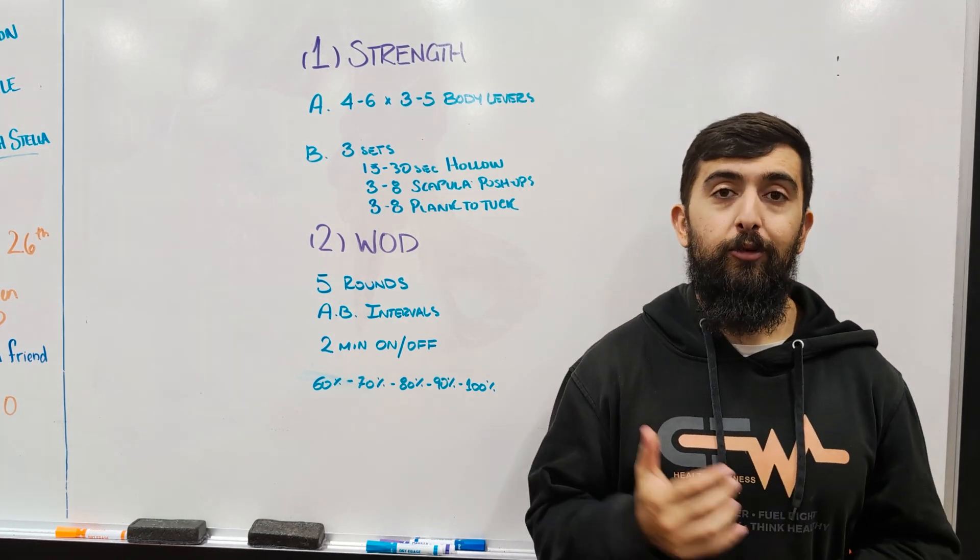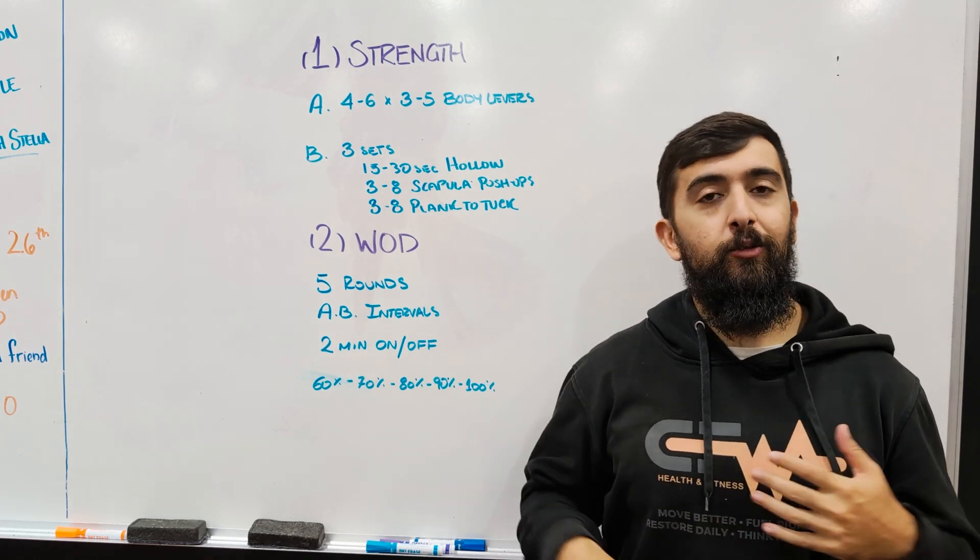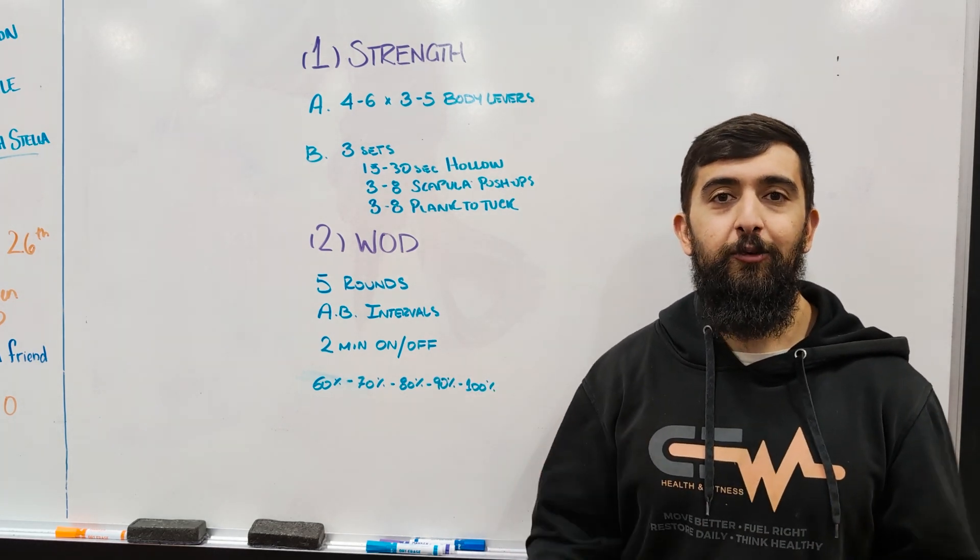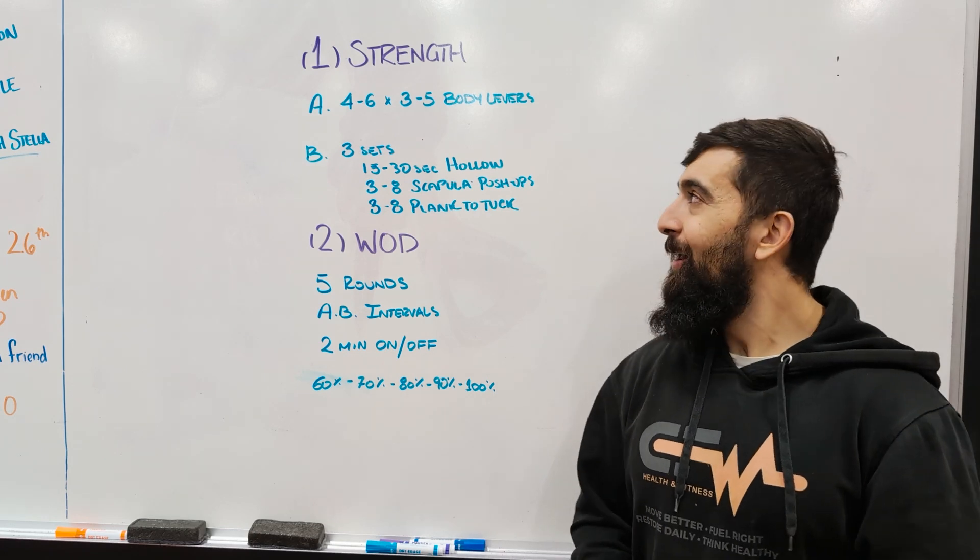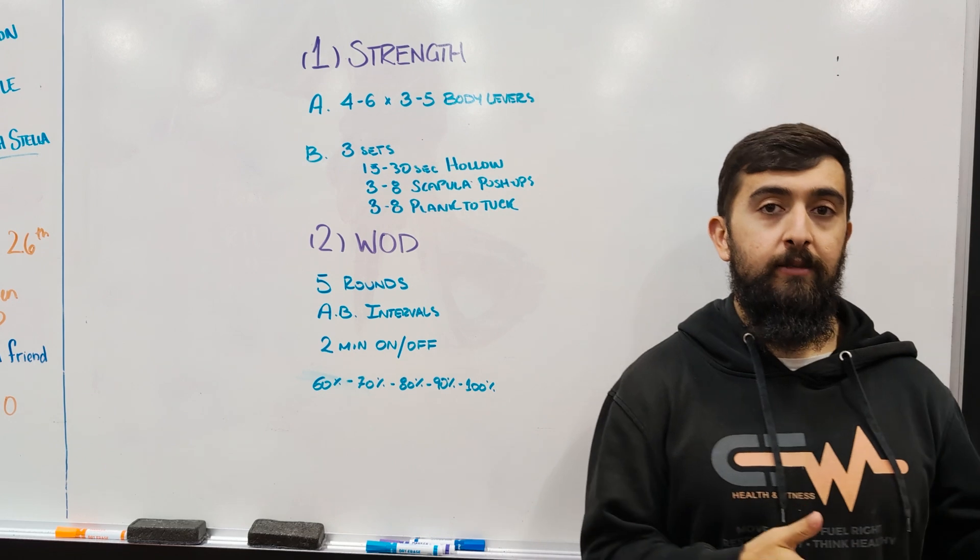Part A being the body lever, so we're working on that skill of controlling the descent. This is a great way to build core strength. If you're working up to a toes-to-bar, this is also another way to work on it. We're doing four to six sets of three to five reps, so a little bit more sets than the last time.